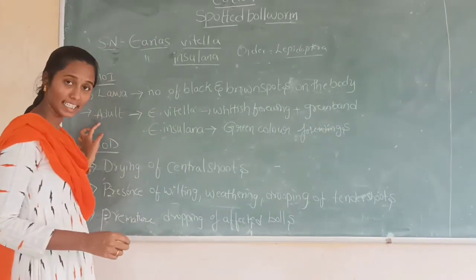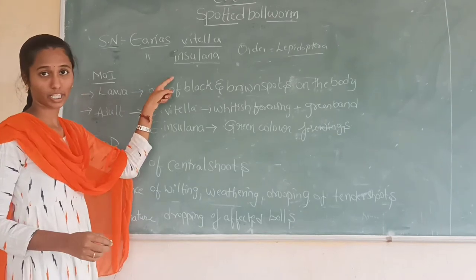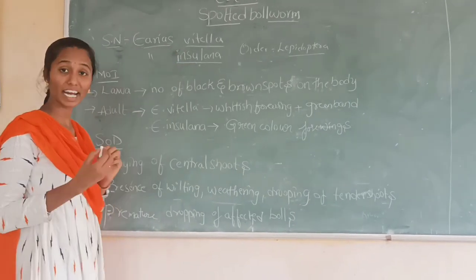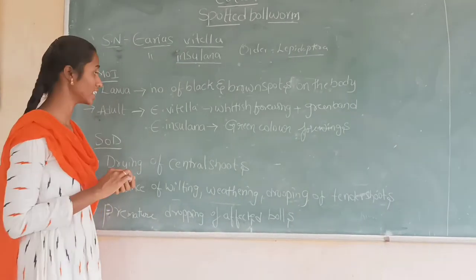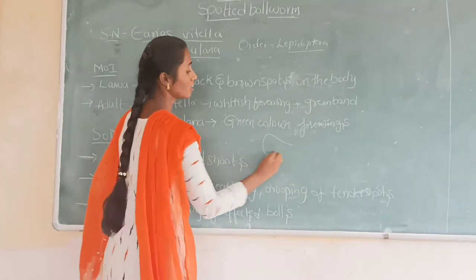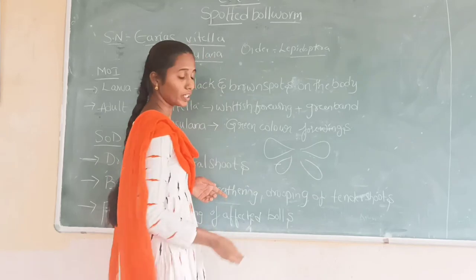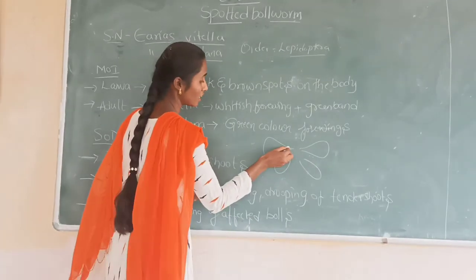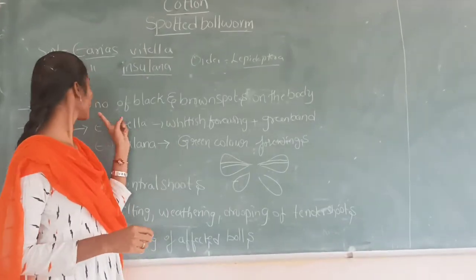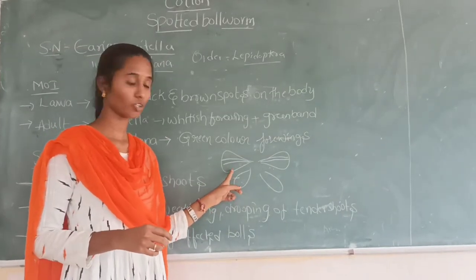Next, I am going to show you the adult. There are two species. In the middle, you have a white color. There is a dark eye. The forewings are white colored. So, we have four wings of white color.